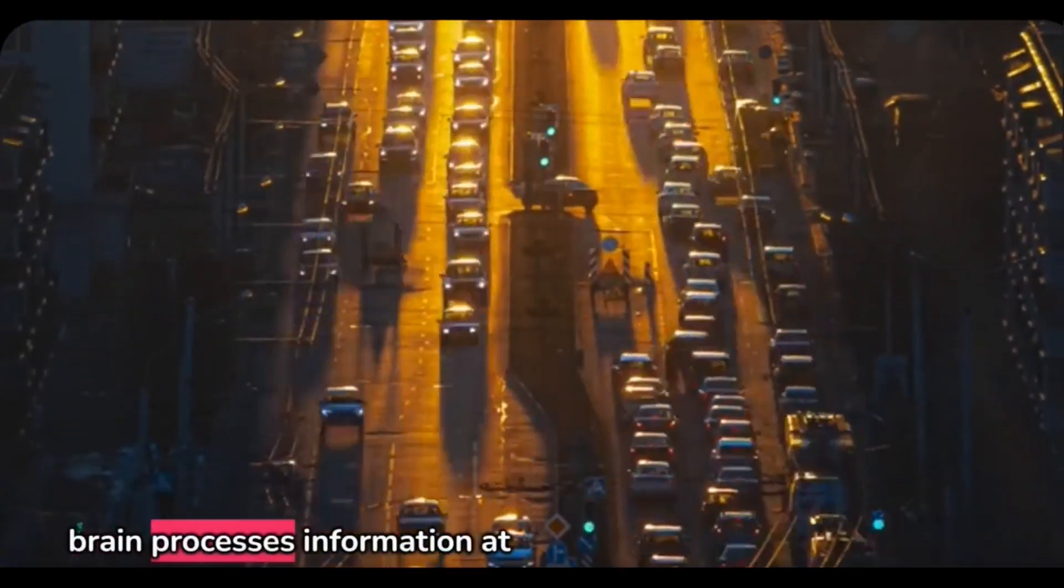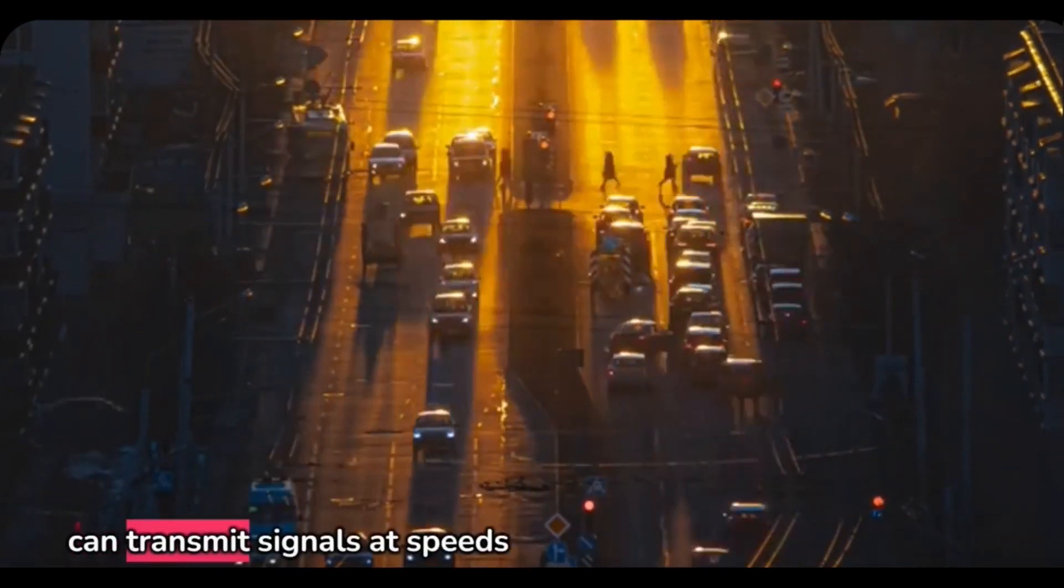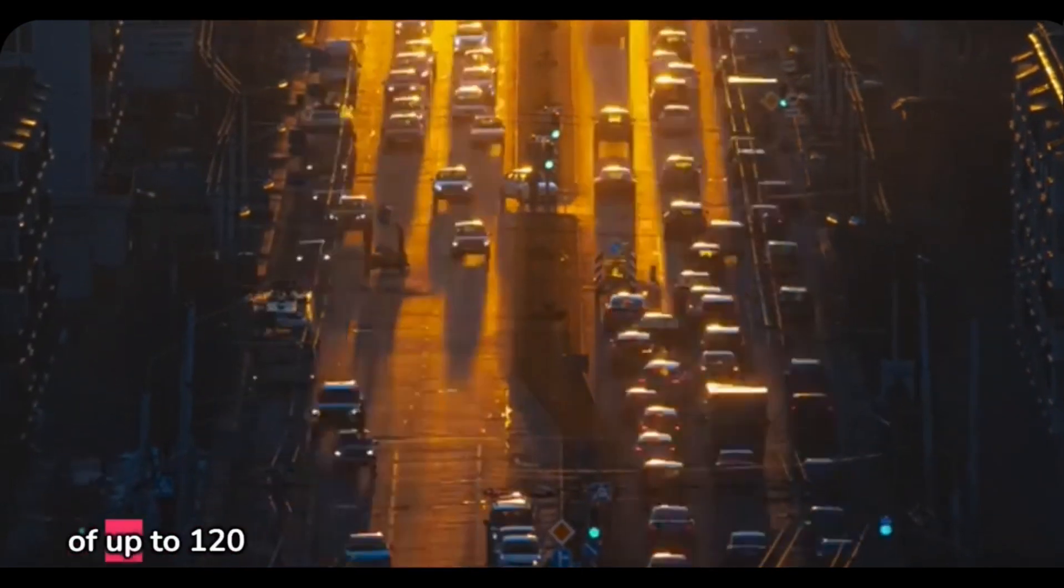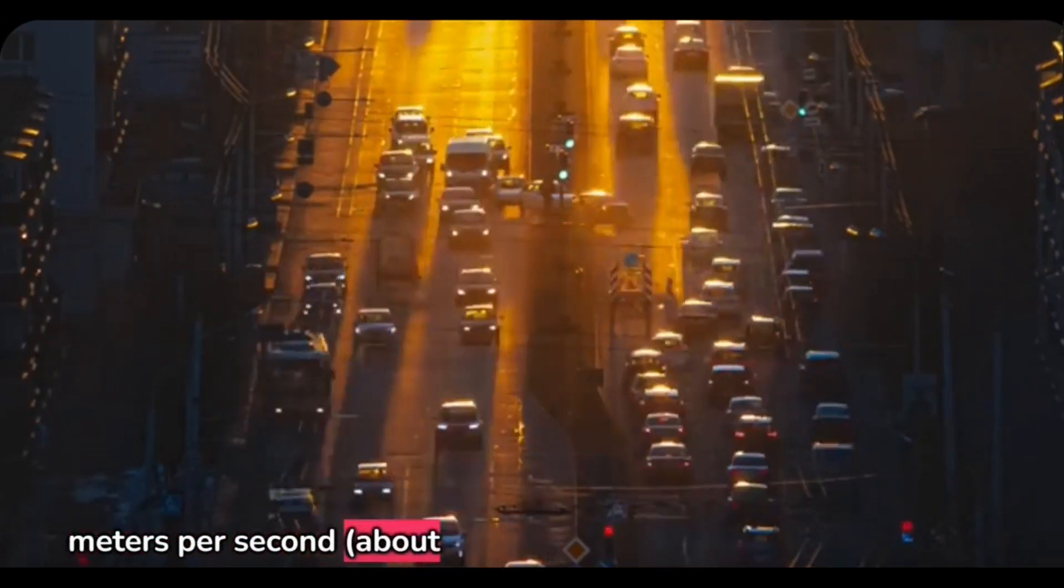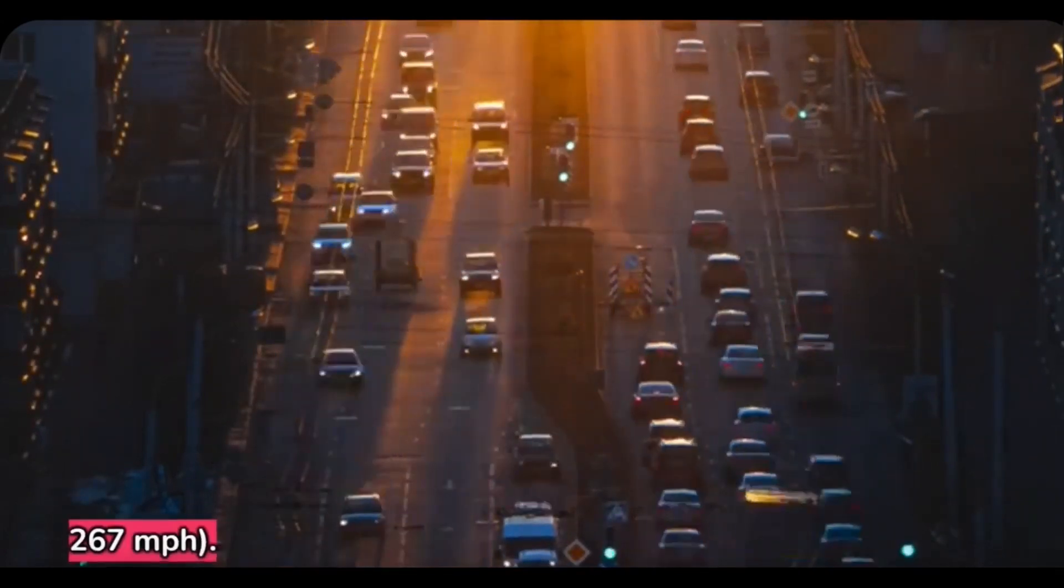The brain processes information at an incredibly fast speed. Neurons can transmit signals at speeds of up to 120 meters per second, about 430 kilometers per hour, or 267 miles per hour.